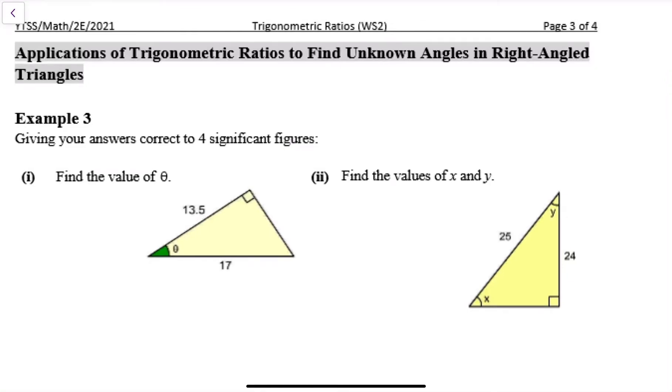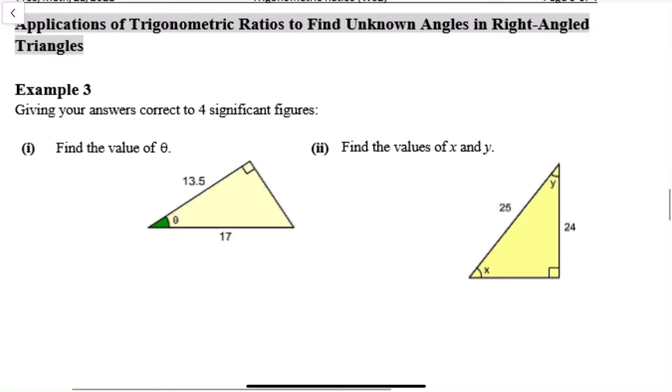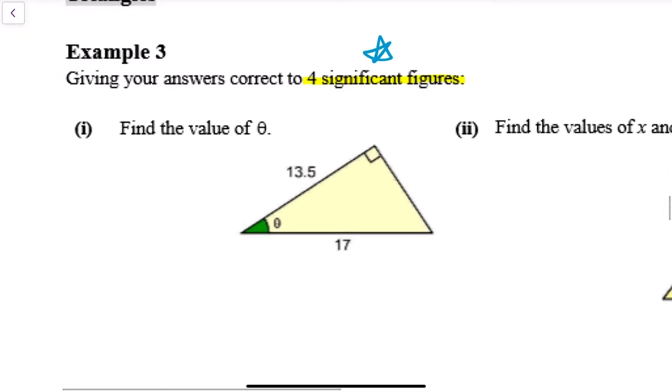Okay, so this will be on the application of trigonometry for finding unknown angles, Example 3. Make sure you don't miss important details when answering the question. If they ask for four significant figures, you must follow. If not, it will be one decimal point by default for angles.